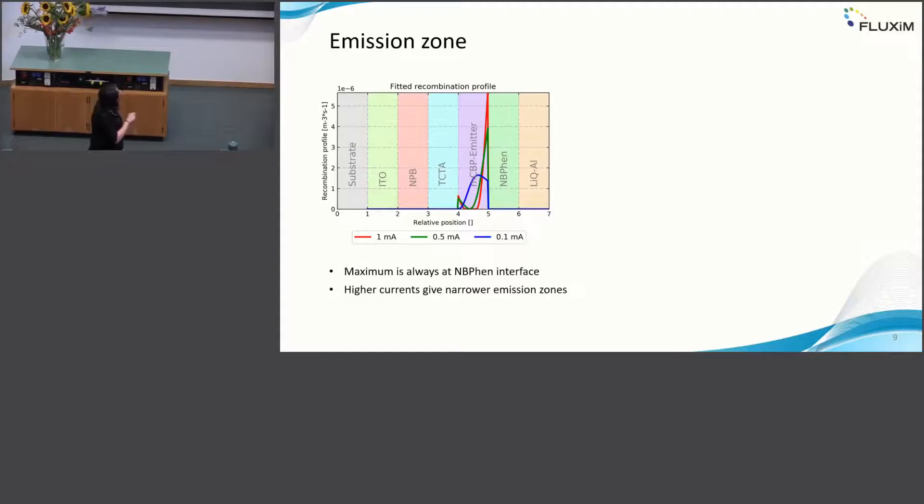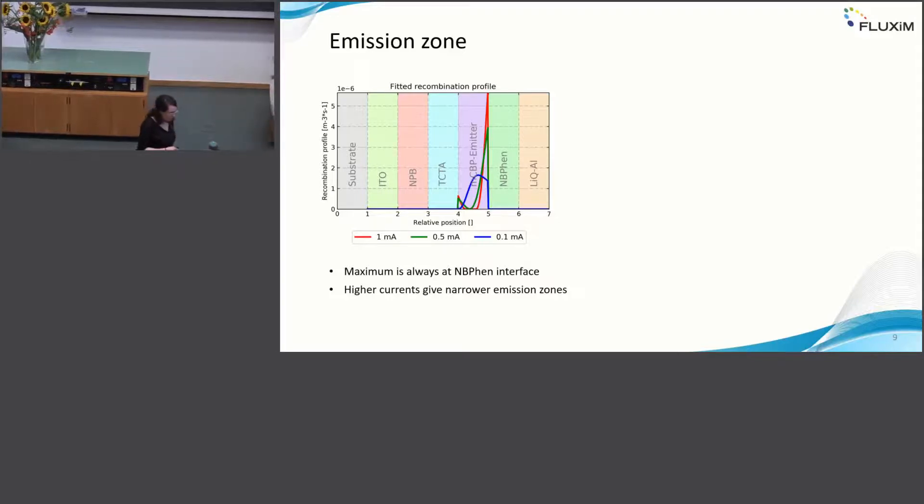This is what we got. At 0.1 milliamps, I get a fairly broad emission, still concentrated mostly at NB-FAN interface. Then I get some kind of split emission zone, but predominantly at the NB-FAN interface still.